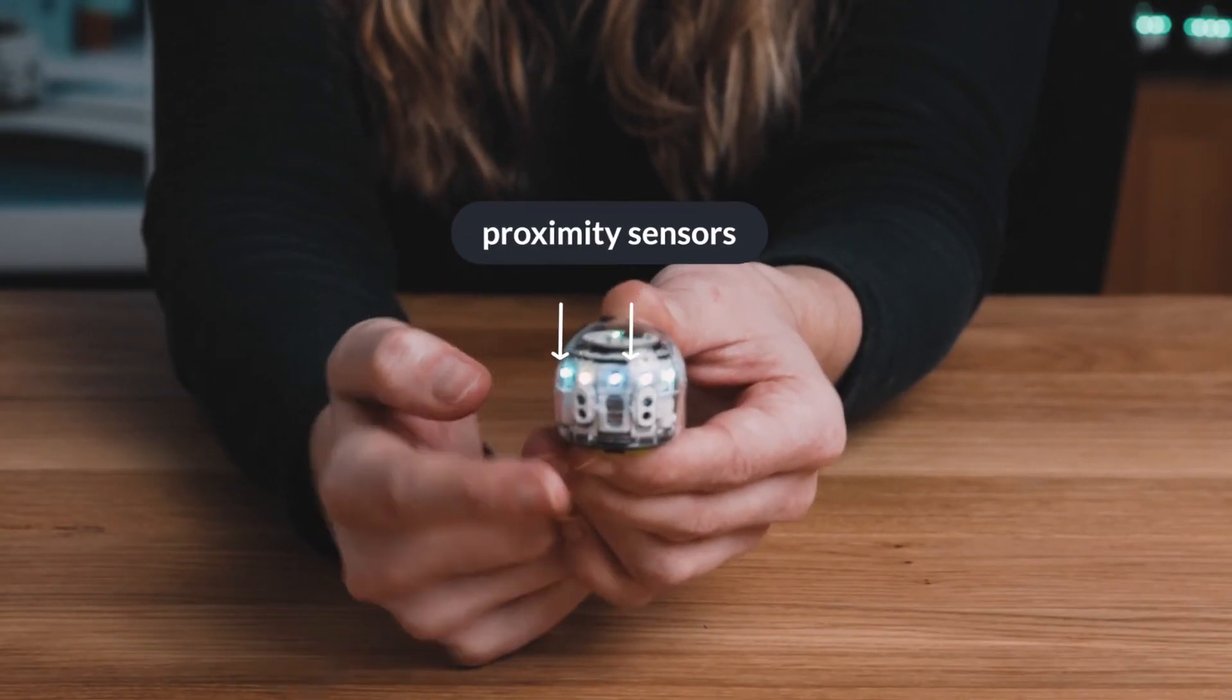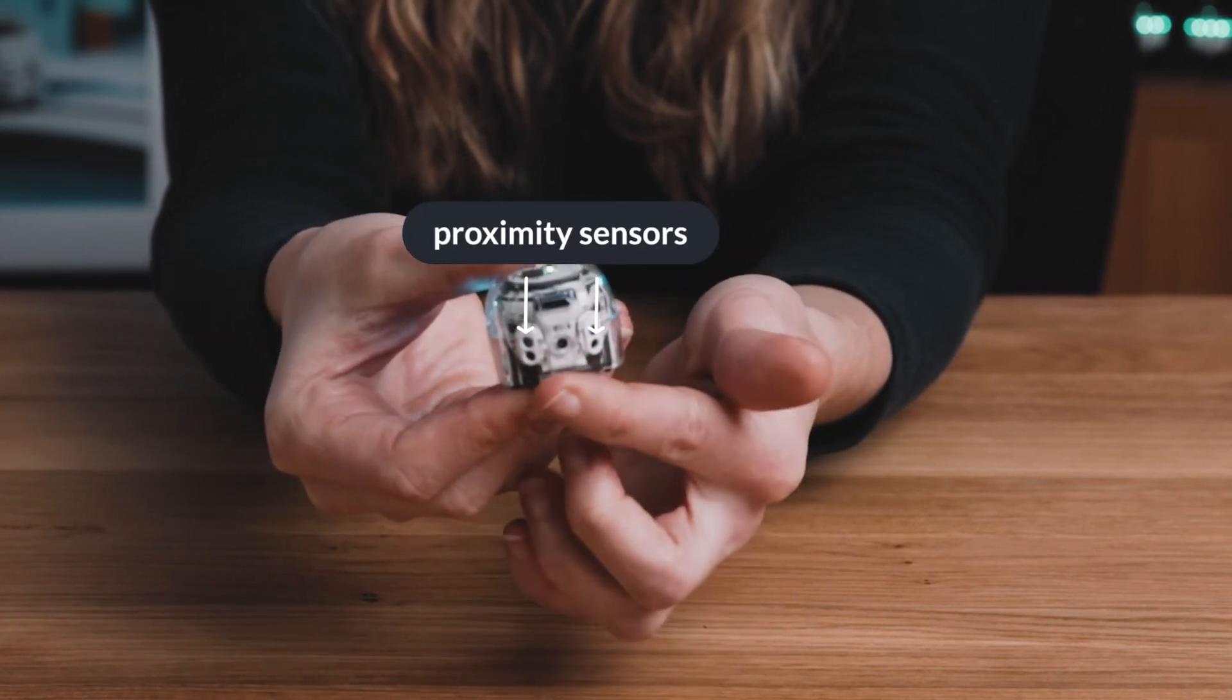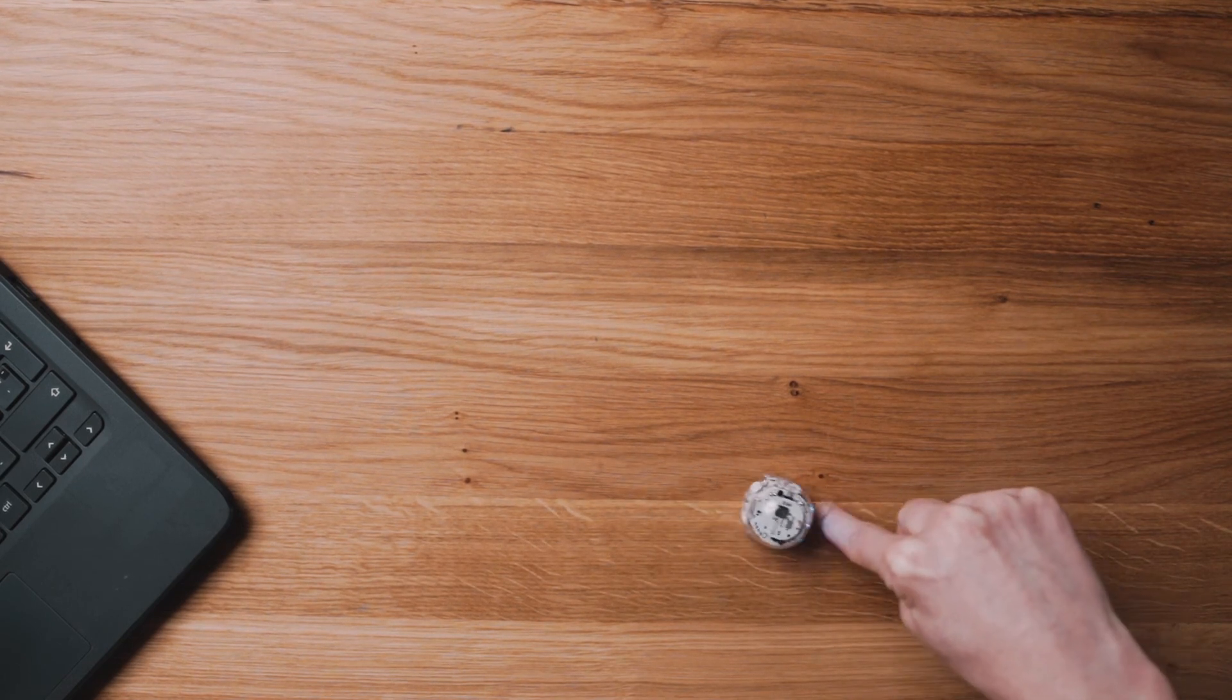EVO has two proximity sensors on the front and two on the back. You can program EVO using these proximity sensors.